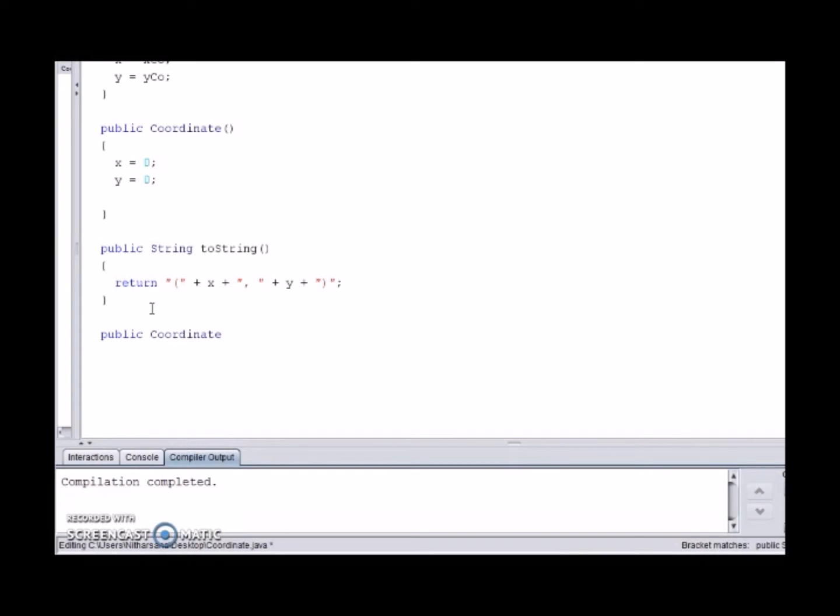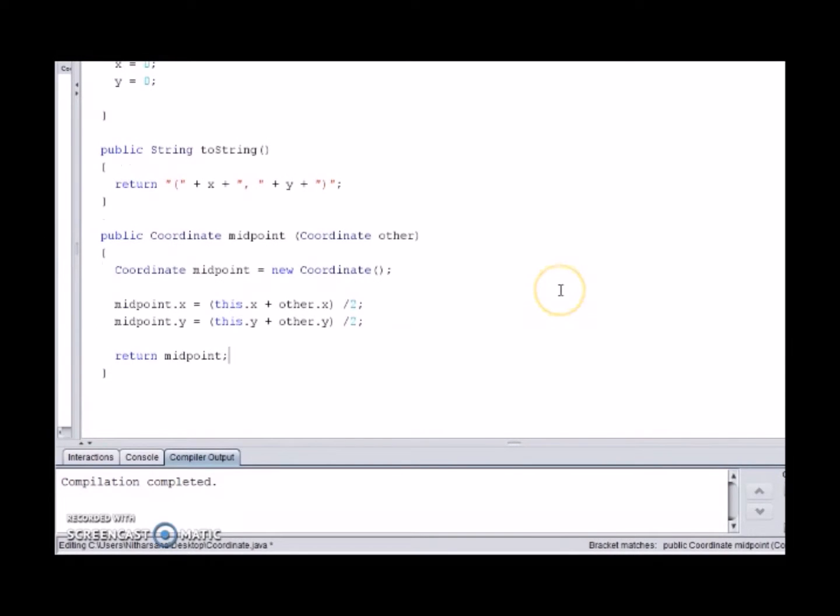To create an instance method, you start by writing public, the return type, the method name and the parameters. Inside we must write out the body or procedure to configure the midpoint, which we have skipped over here.